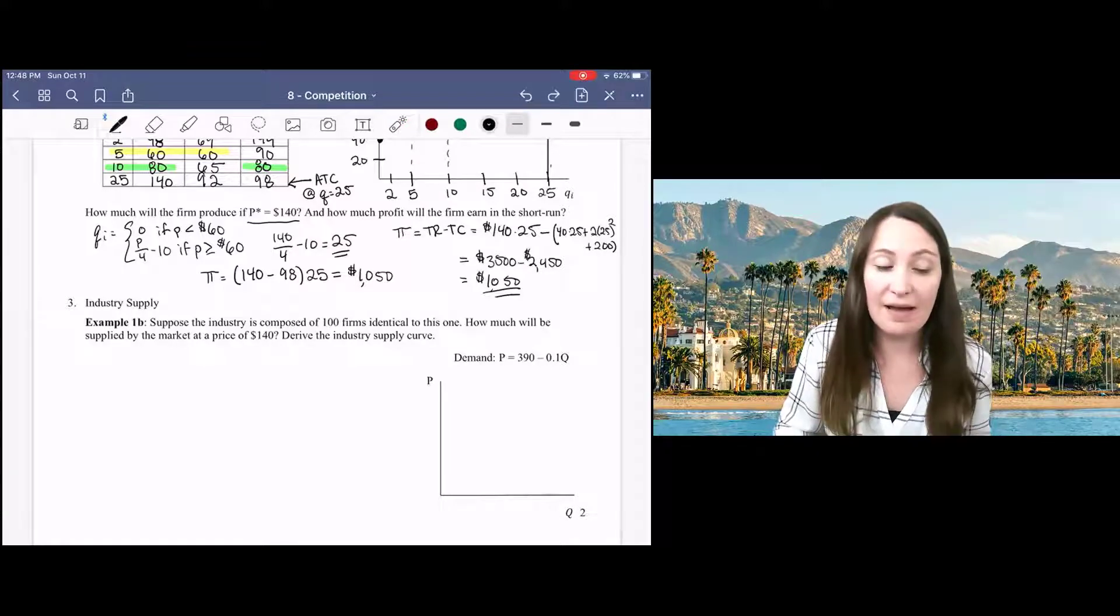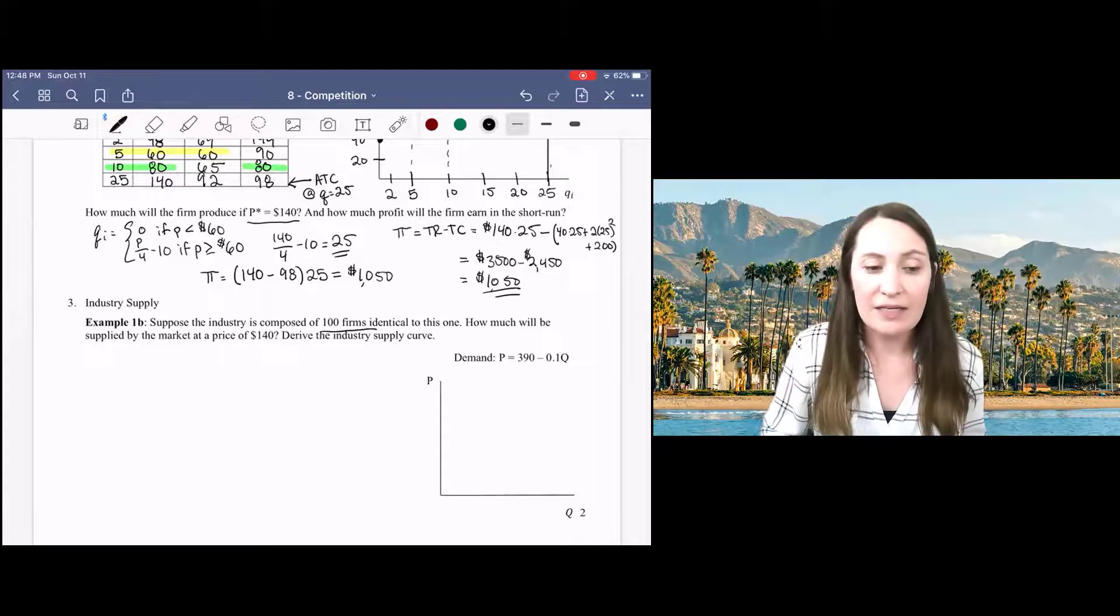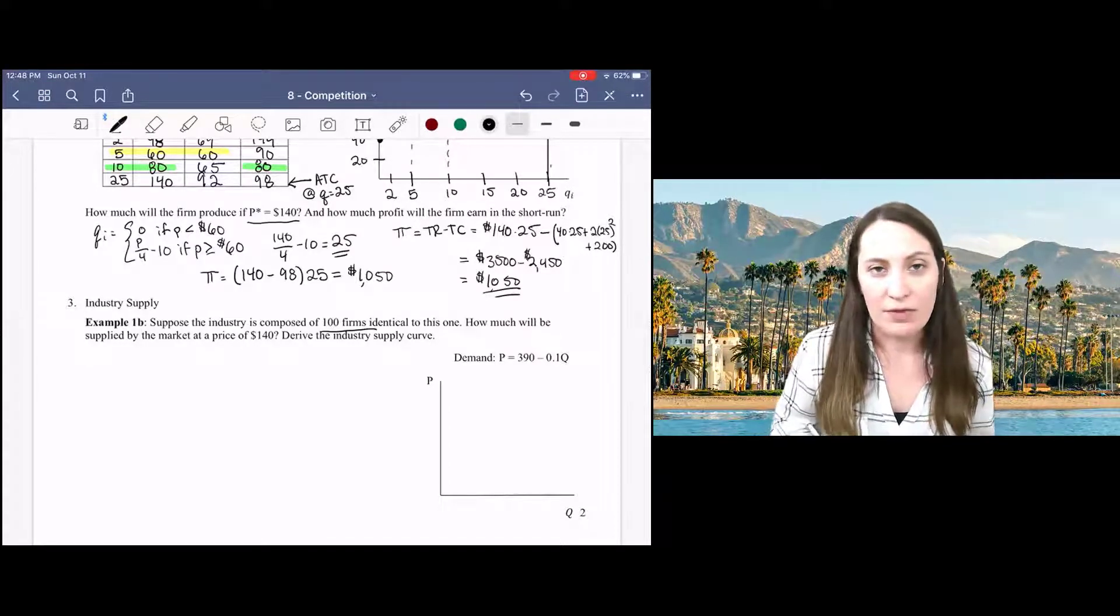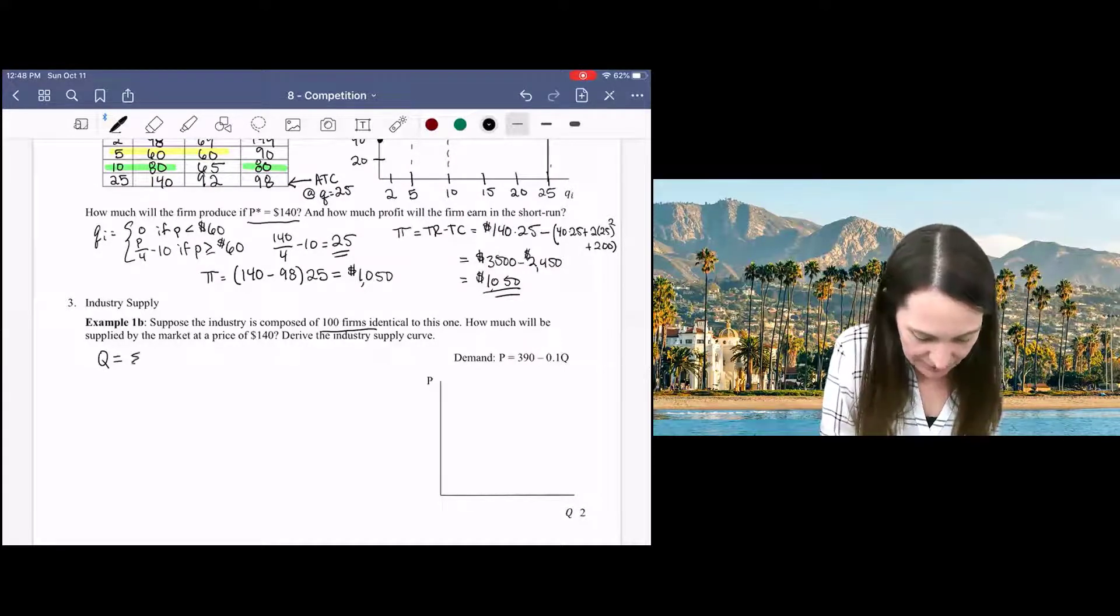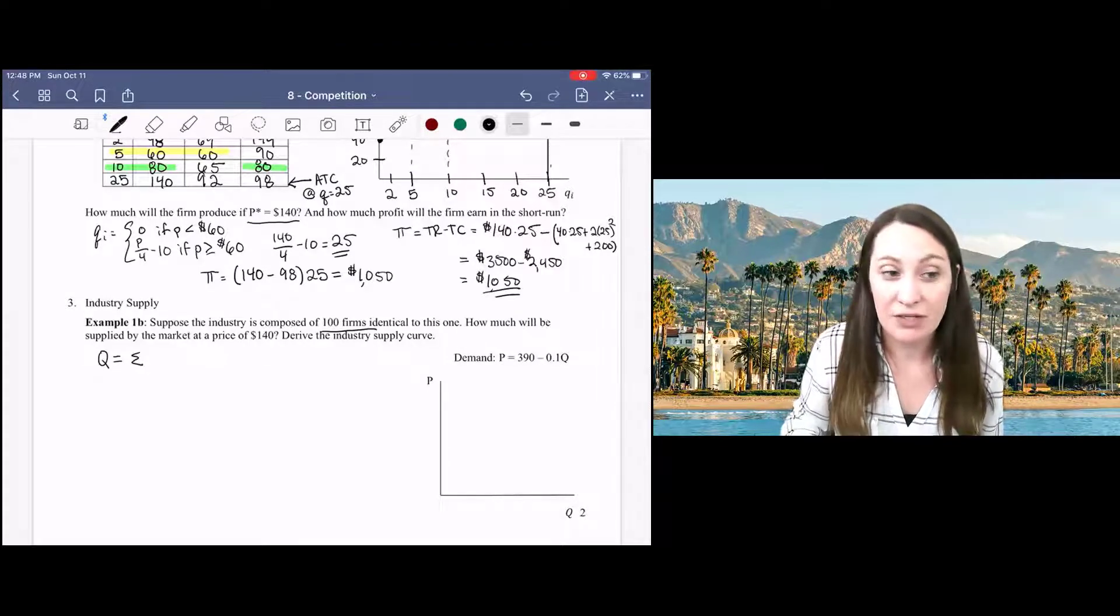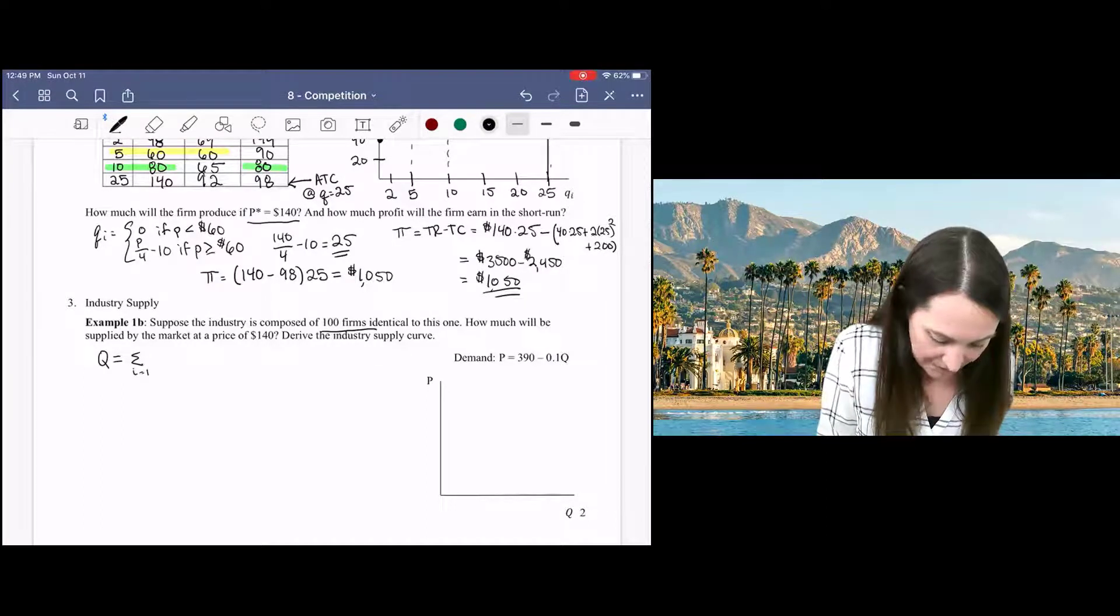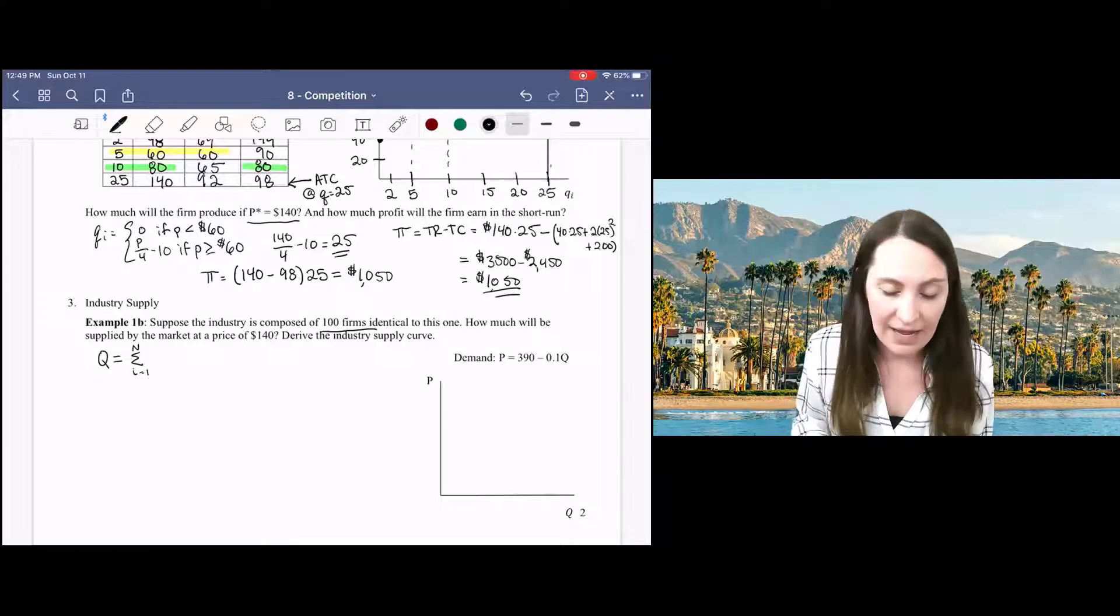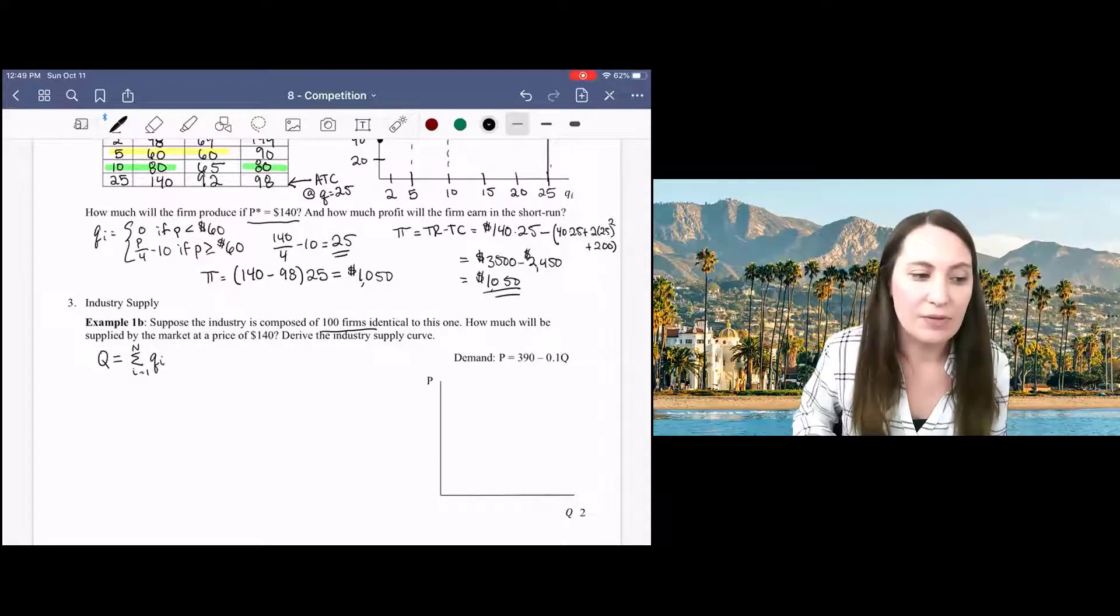So here we're going to assume that we have 100 identical firms and we want to talk now about what the industry supply curve looks like and make a graph for the market. When we're trying to aggregate our supply curves, this is really the same as when we add up all of the demand curves, which we talked about earlier. We want to add them over quantity. So we want to sum from I equals 1 to N, all of the firms, all of our individual quantities supplied.